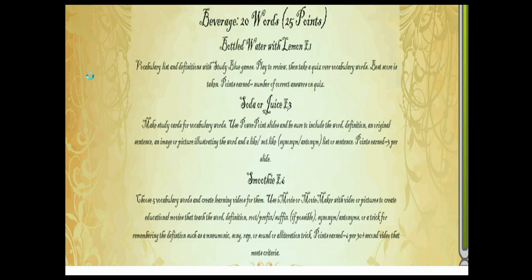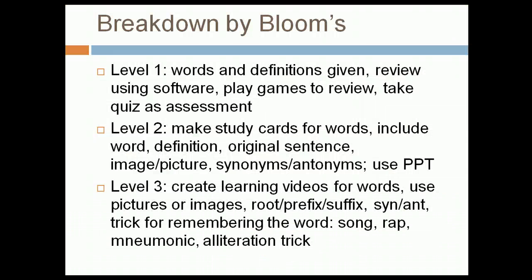For the smoothie option, you can use iMovie or MovieMaker, with pictures and videos to create educational movies that teach the word to somebody else. You can use roots, prefixes, suffixes, synonyms, antonyms, and a trick for remembering the definition — mnemonics, a song, rap, sound, or alliteration trick. The idea is that students create something new in a 30-second video that teaches other people, which is one of the higher-level thinking skills and why it's worth more points.